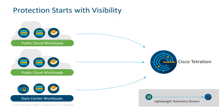Before we can do anything — before we can start implementing zero trust, before we can start segmenting users from applications and application tiers from each other — you can't do any of that until you understand what is actually going on in your environment. It's very common to not have a good grip on what is going on. It was typically easier in the past to take some network choke points and analyze traffic data there, but as application models changed and people pushed workloads to the cloud, understanding what is going on between those workloads — especially that east-west lateral movement — has become incredibly difficult.